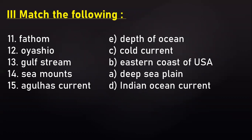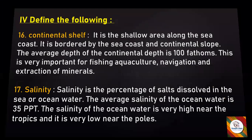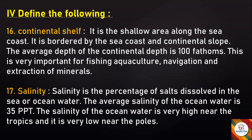Now let's move to define the following, question number 16 continued. Continental shelf: It is the shallow area along the sea coast, bordered by the sea coast and the continental slope. The average depth of the continental shelf is 100 fathoms. It is very important for fishing, aquaculture, navigation, and extraction of minerals.